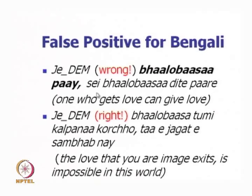We have a very interesting situation where the word J is followed by an identical noun in both sentences, but the further sentential context shows where DEM would be wrong and where it will be right. The word J/Jo/Je can have both demonstrative and pronoun roles, and the clue for disambiguation can come from far apart in the sentence — for example, from the word 'paay' (one who gets), which is quite far from J and can be even farther depending on how much text is inserted.